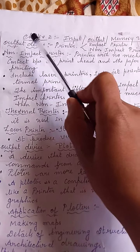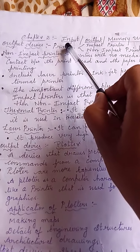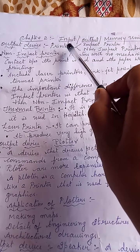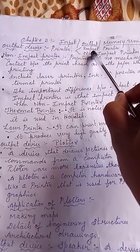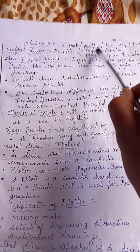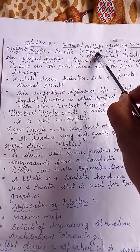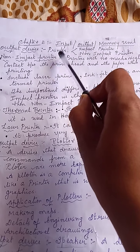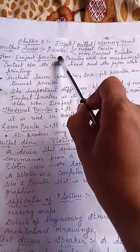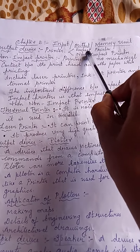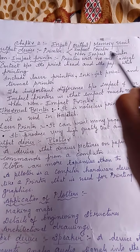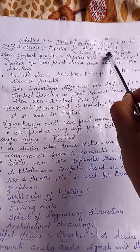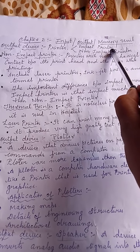Hello children. Now Chapter 2 — Input, Output and Memory Devices. We have discussed about input and output. In output devices, we discussed the monitor and the printer. In printers, we have two types: impact printer and non-impact printer. We have already discussed what is an impact printer.